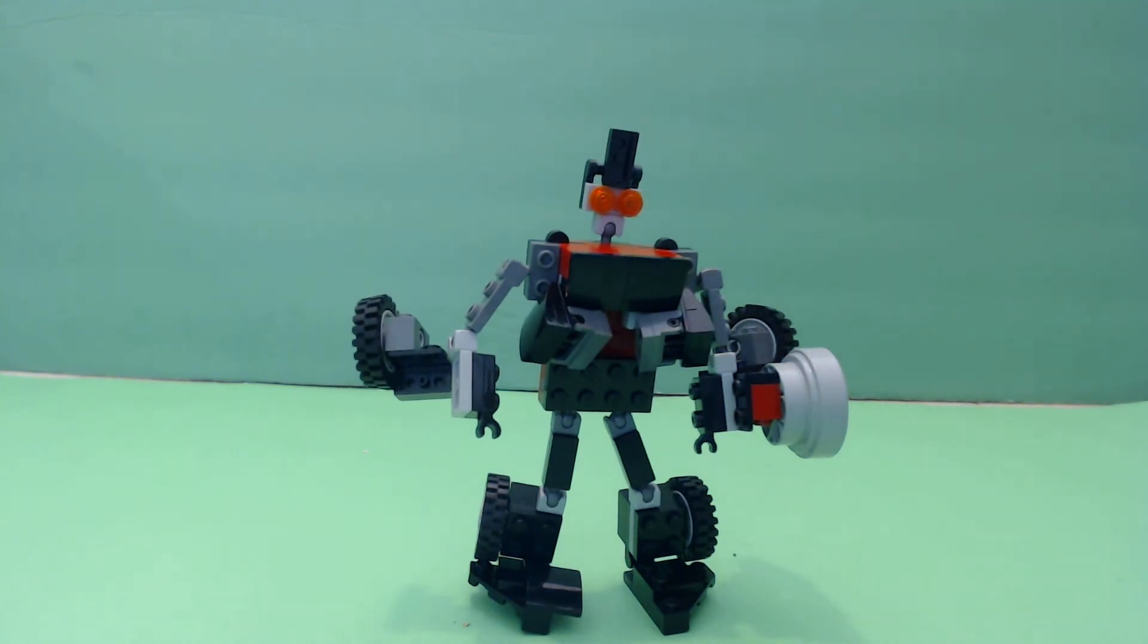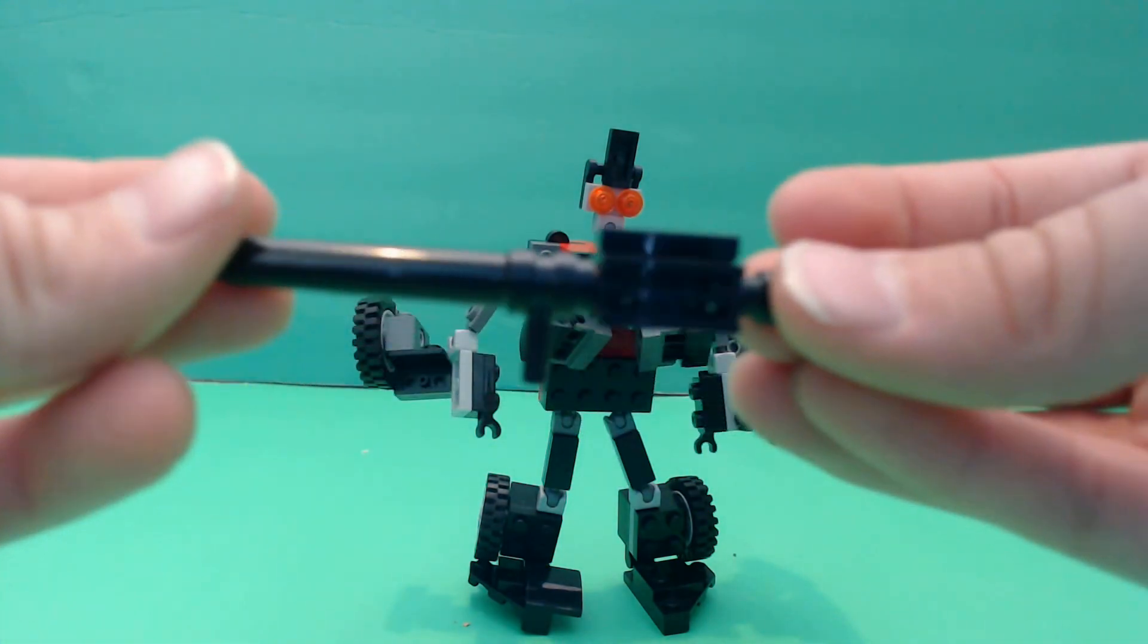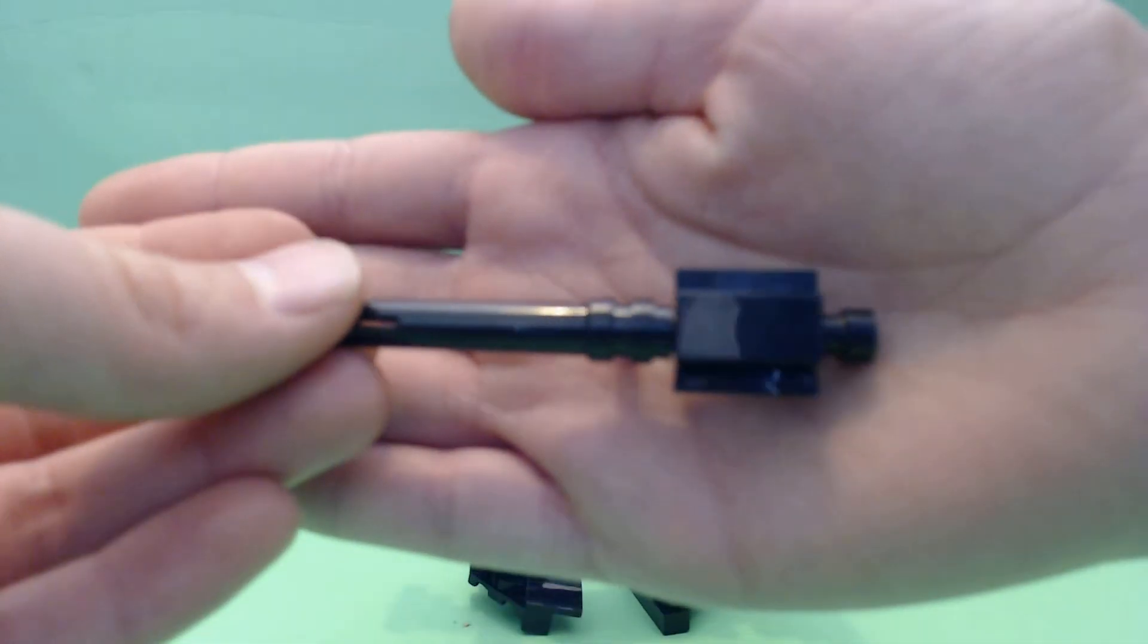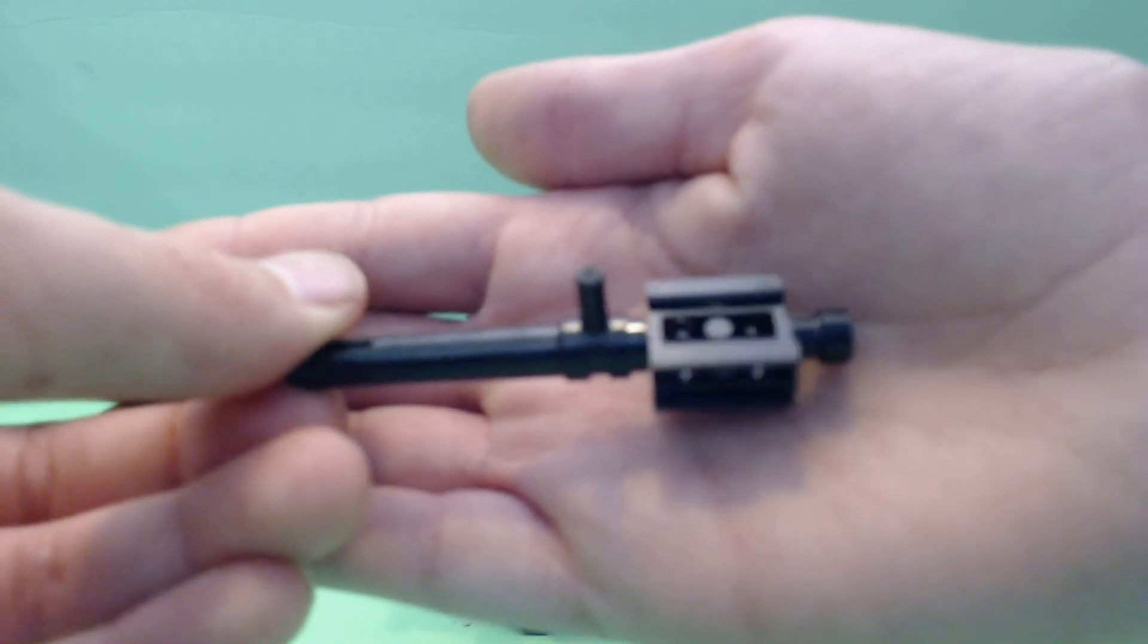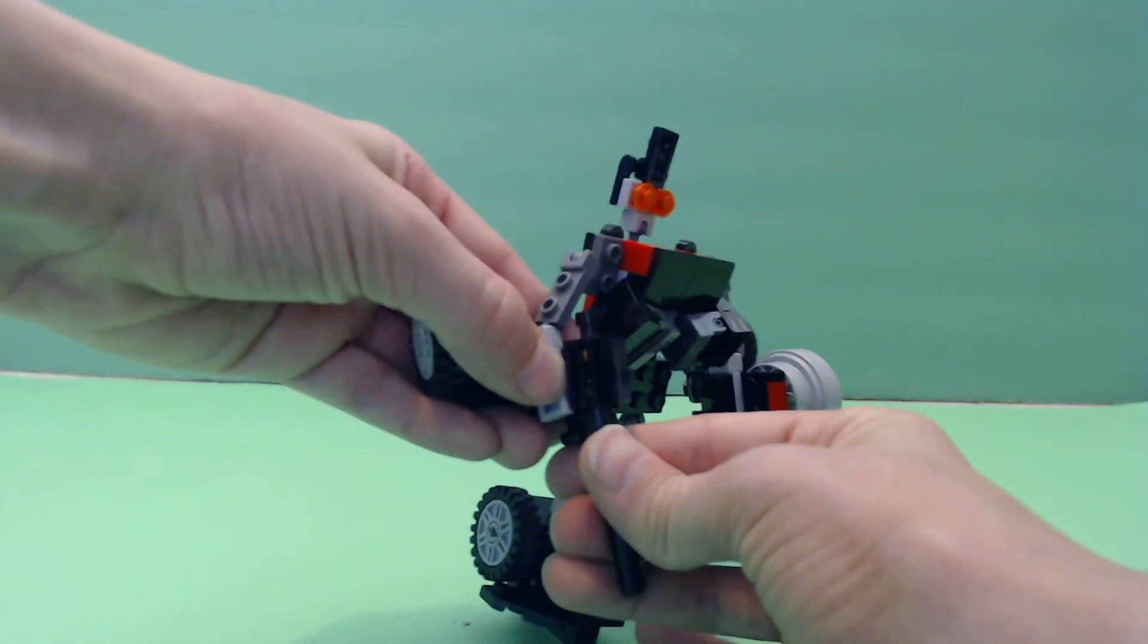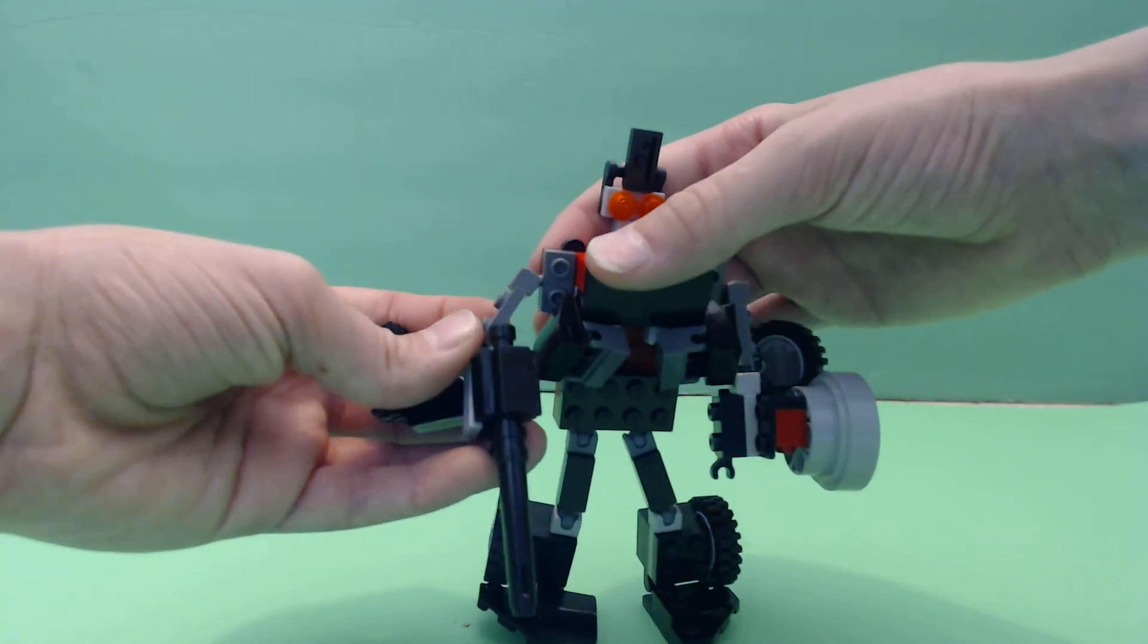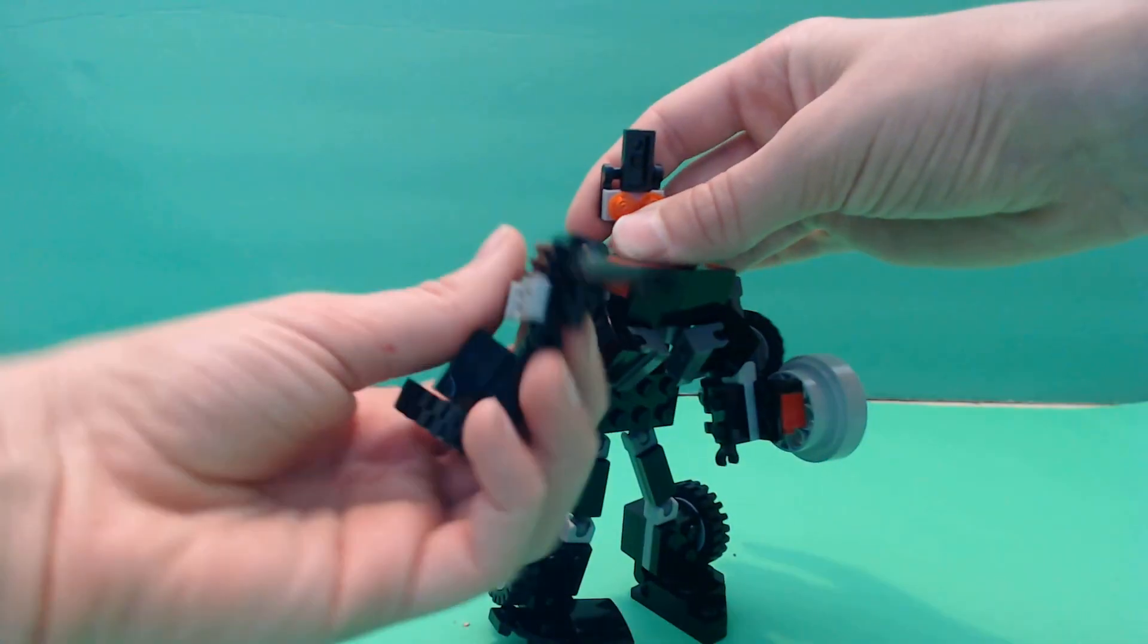And then here is his gun. And it's got grill pieces and a big long cannon. So you can just plug that into either arm, and it fits quite nicely. And there he has a gun, so he can shoot Decepticons.